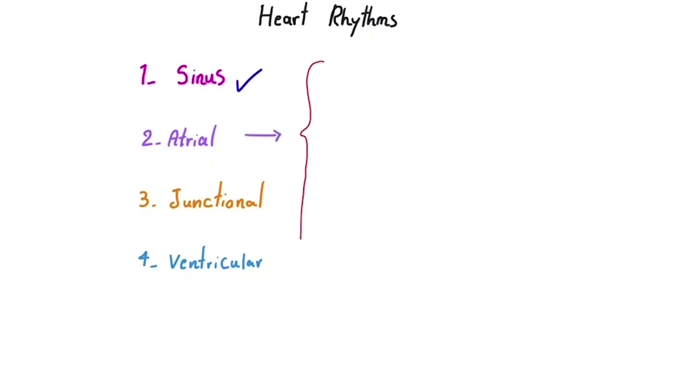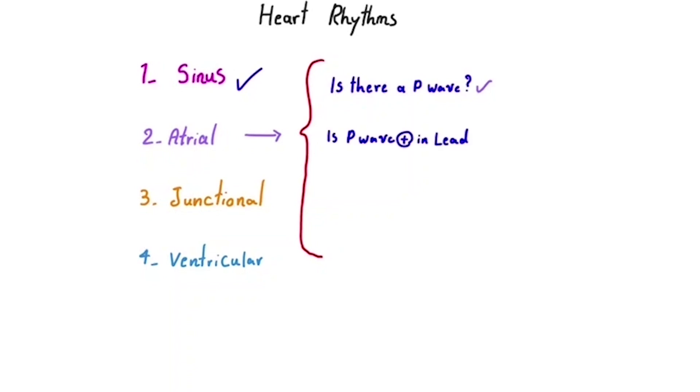For example, let's take atrial rhythm. Do we see P waves on the ECG? Yes, because the impulse originates in the atria, it still produces a P wave before reaching the ventricles. Are the P waves upright in leads I and II and inverted in AVR? Here the answer becomes uncertain. It depends on where exactly in the atria the impulse is generated. We'll explore this in detail with the schematic on the next slide.